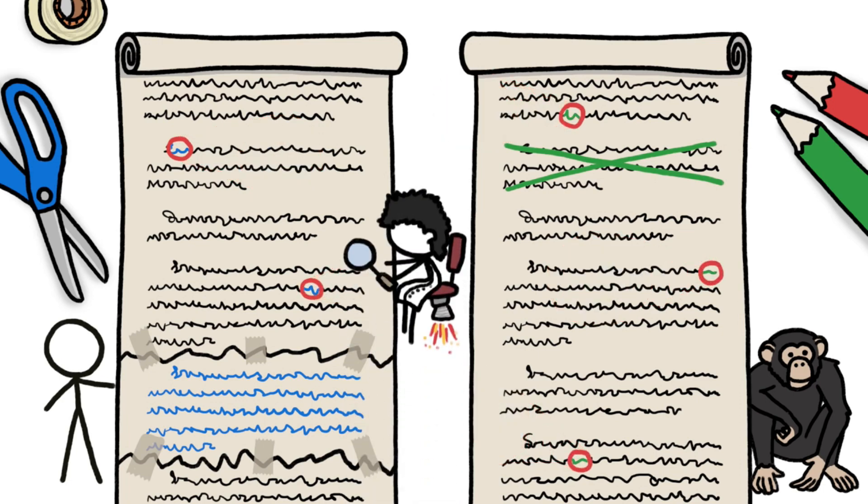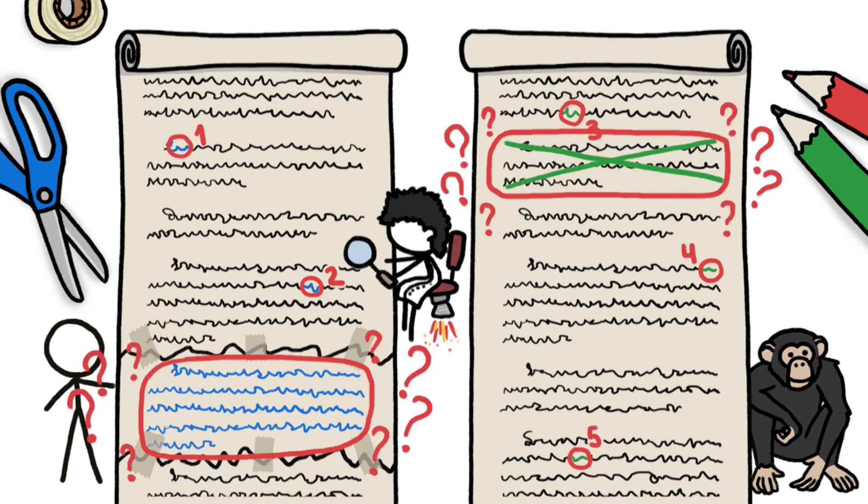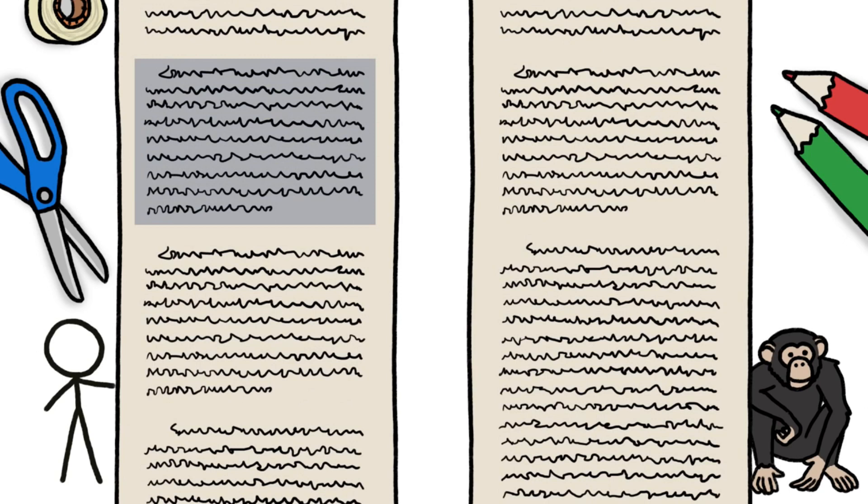When researchers sat down to compare the chimp and human genomes, those single-letter differences were easy to tally, but the big mismatch sections weren't. For example, if a genetic paragraph thousands of letters long appears twice in a human scroll but only once in its chimp counterpart, should that second human copy count as thousands of changes or just one?